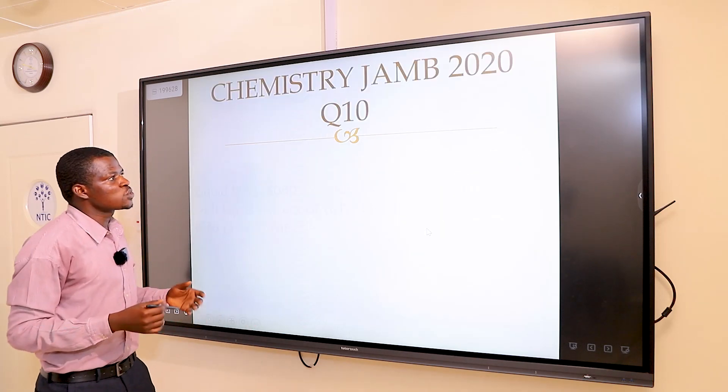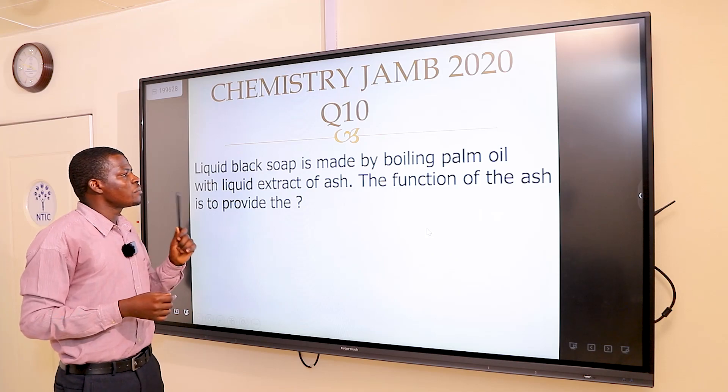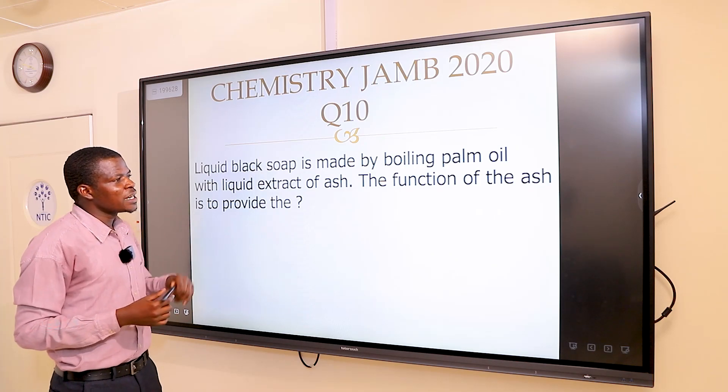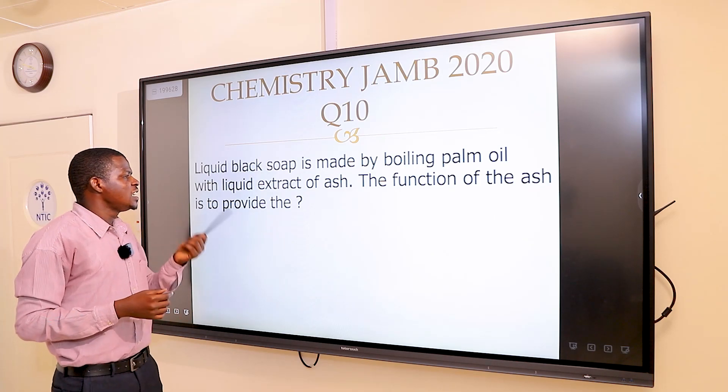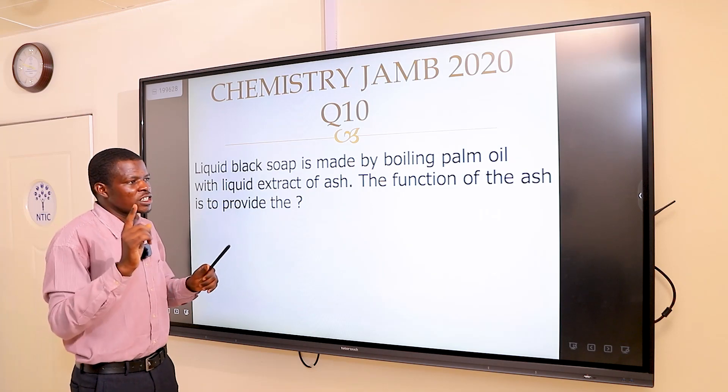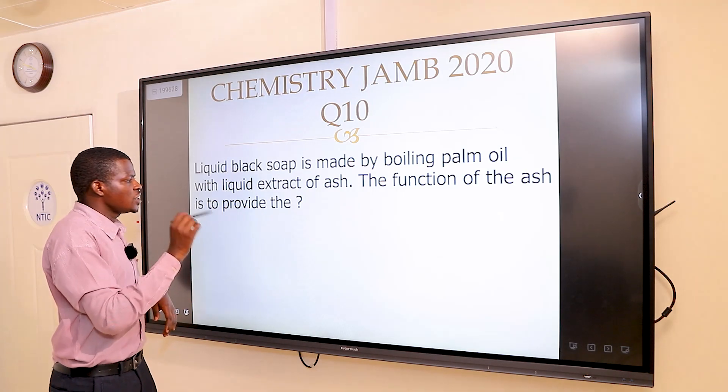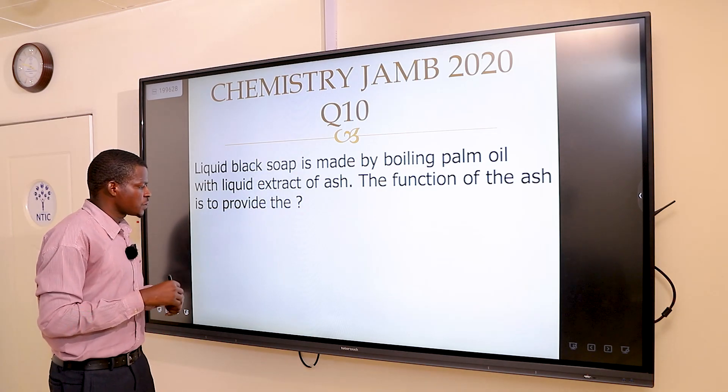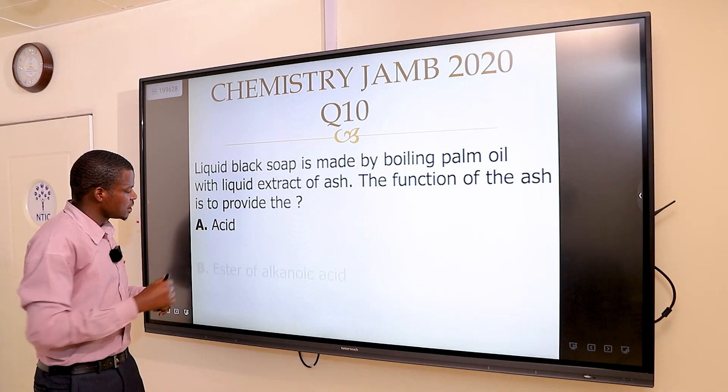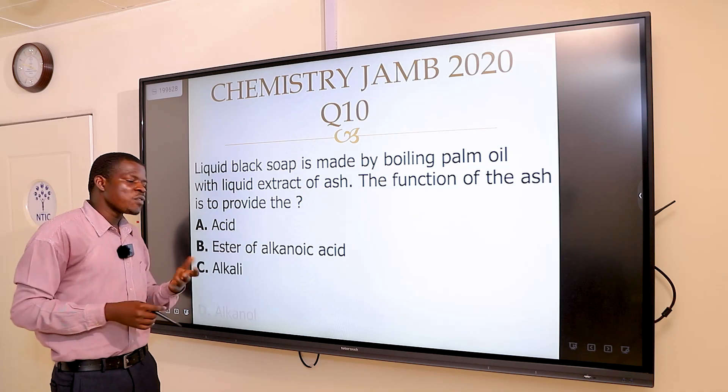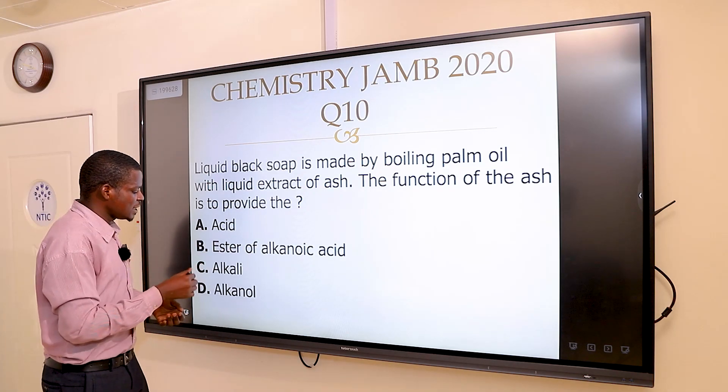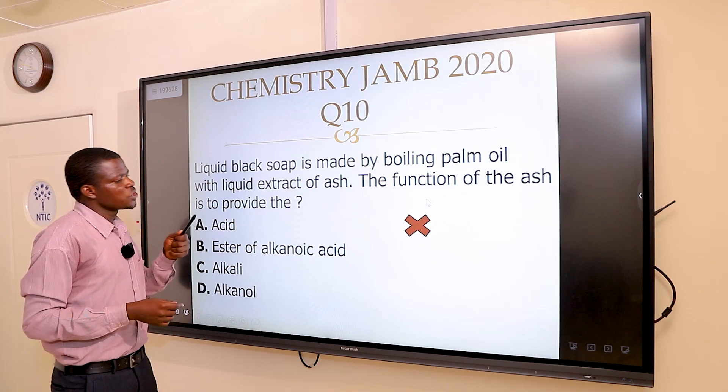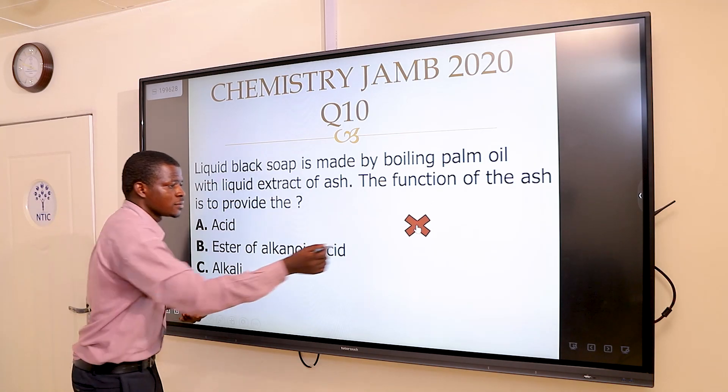The next question says: liquid black soap is made by boiling palm oil with liquid extraction of ash. The function of the ash is to provide the... Options: A, acid; B, ester of alkanoic acid; C, alkali; and D, alkanol. Option A is wrong.